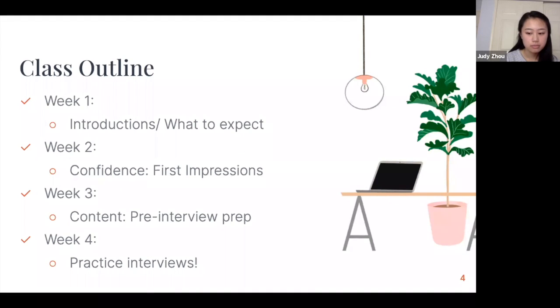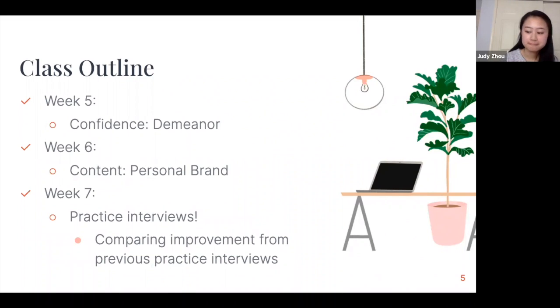As we did in week two and three focusing on the general umbrella of confidence and content, we're going to do it again but with different specific subjects. For week five, we're going to talk more about your demeanor and specifics about how you should talk and act while you're actually in the interview. Week six, we're going to talk about what is a personal brand, why it's important, and help you develop your own personal brand. Week seven, we're going to do our last set of practice interviews and we can compare from week four and talk about what you improved on. We're going to have a rubric and a scoring method so you could see specifically what you have improved on.